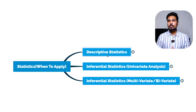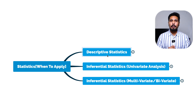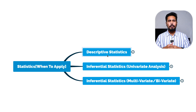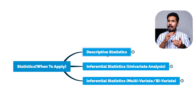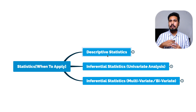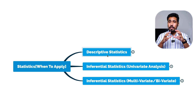Descriptive statistics helps us study the entire structure of your data — for example, understanding measures of central tendency or measures of dispersion. We create visualizations like histograms, box plots, bar plots, scatter plots, and we also use skewness and kurtosis to understand our data.